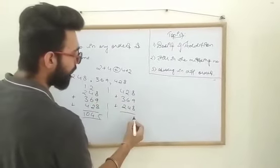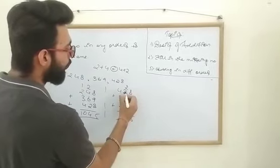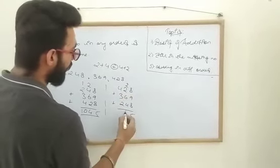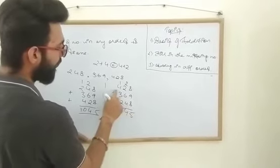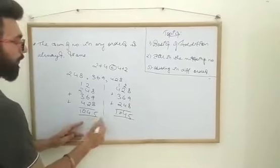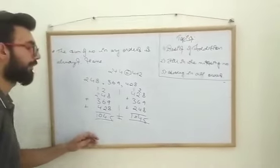8 and 8 is 16, 16 and 9 is 25. 2 and 2 is 4, 4 and 6 is 10, which is 14. One. 5 and 3 is 8, 8 and 2 is 10. So you can directly see that 1045 is completely equal to 1045.